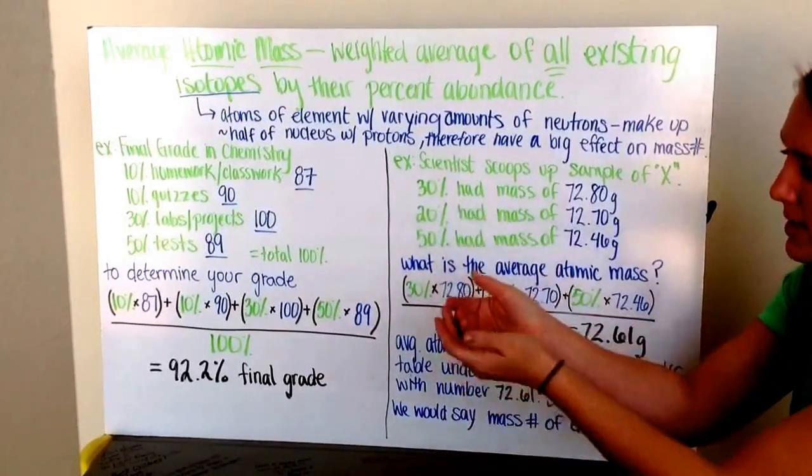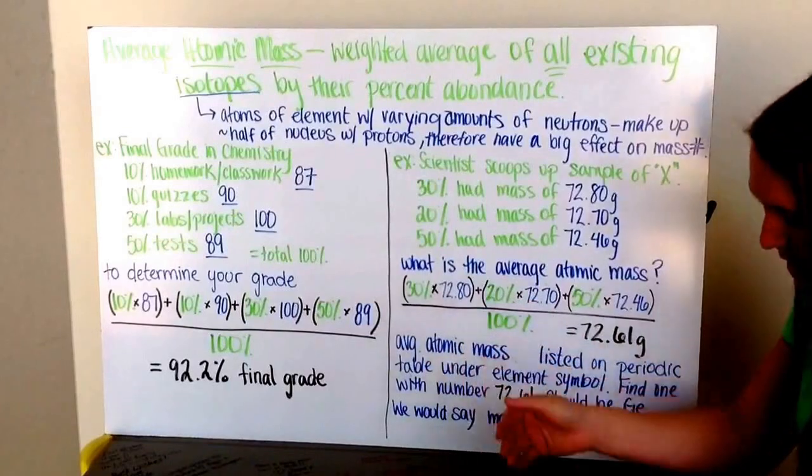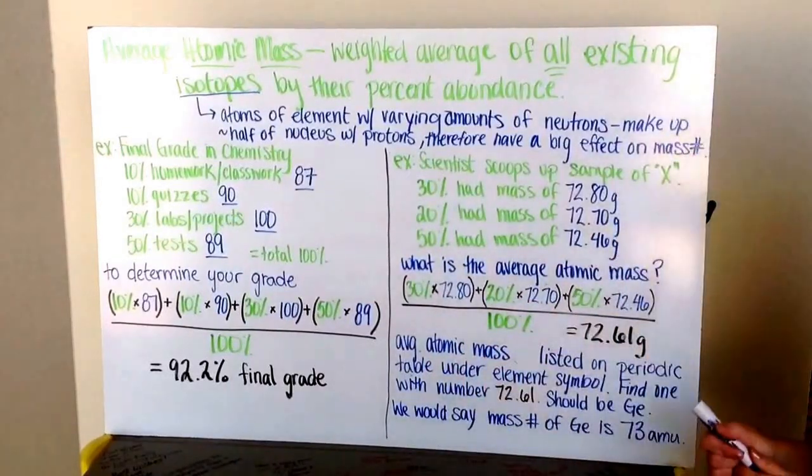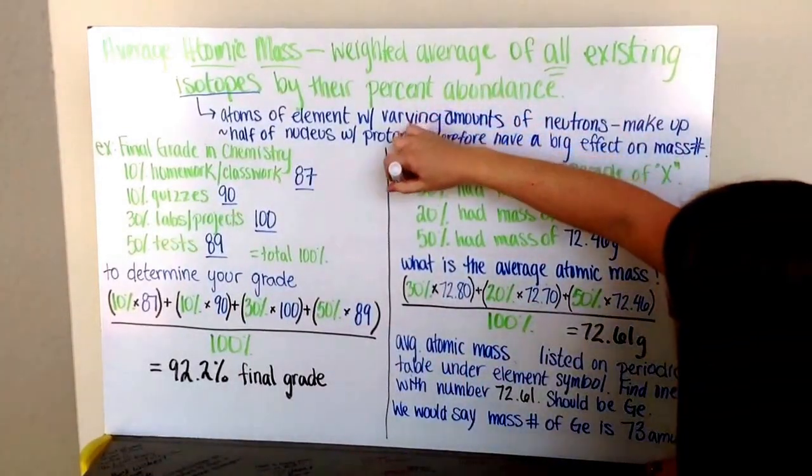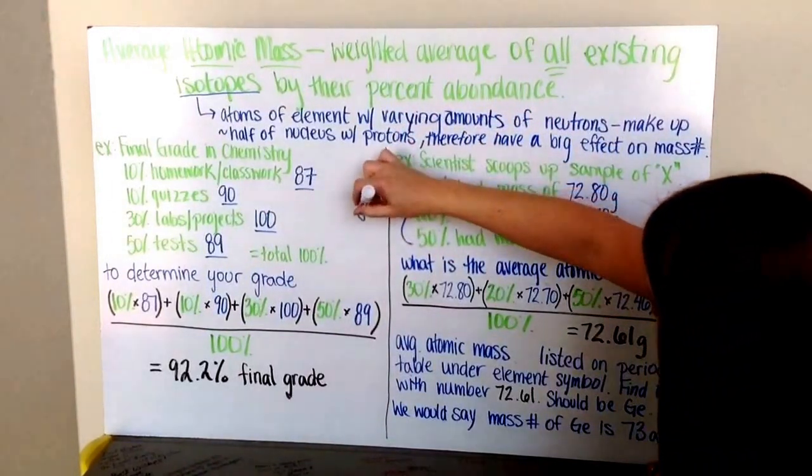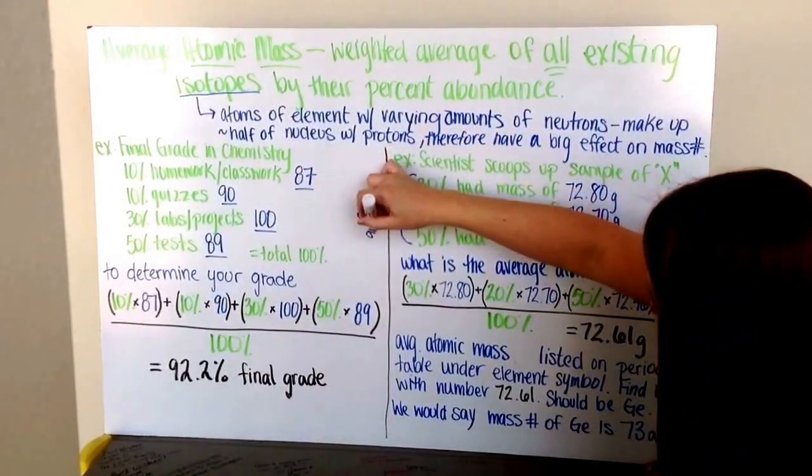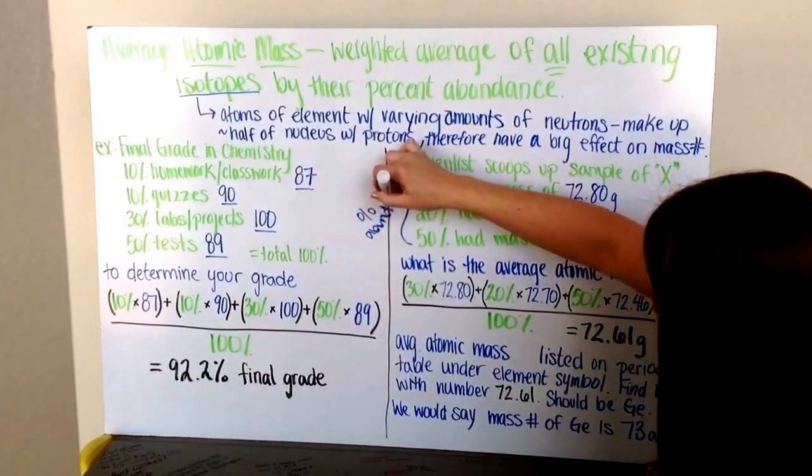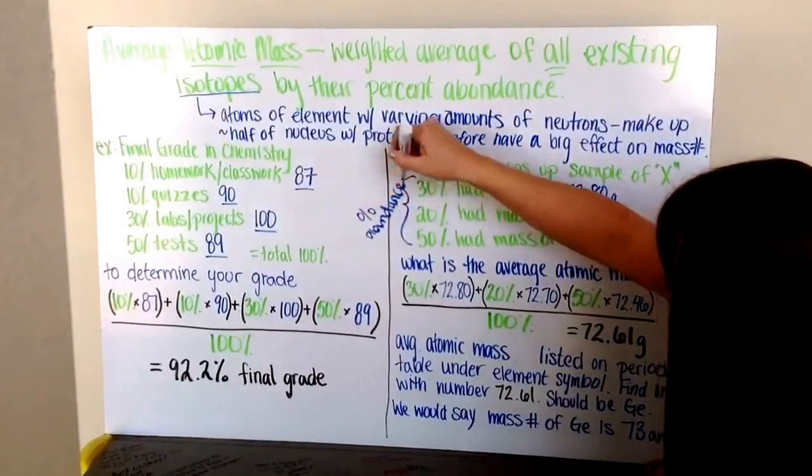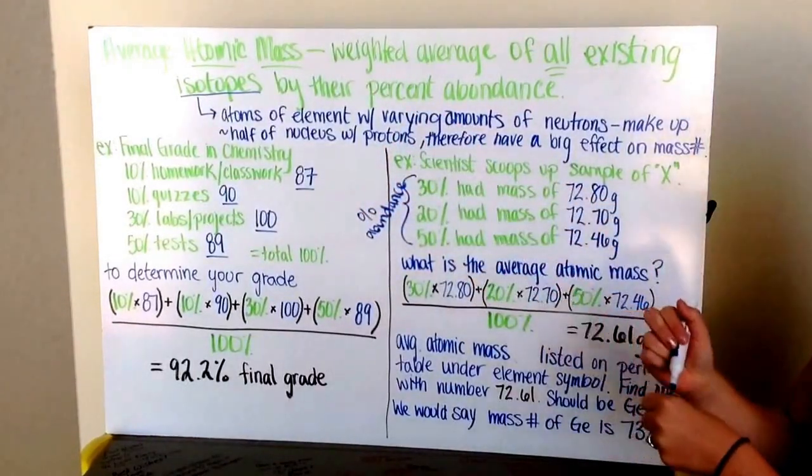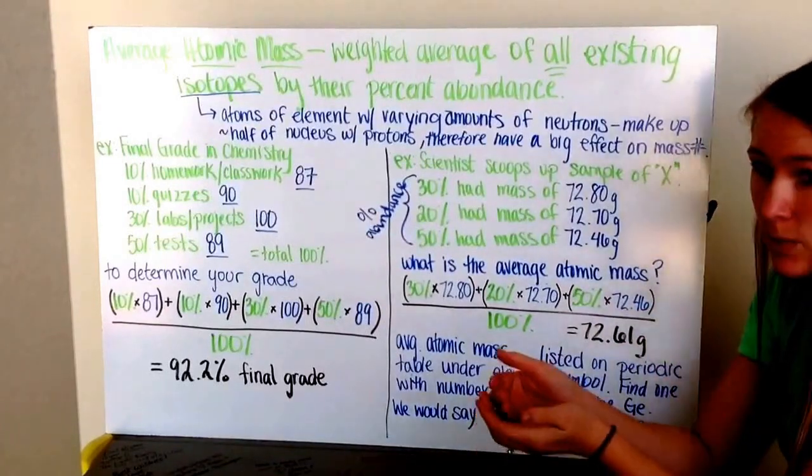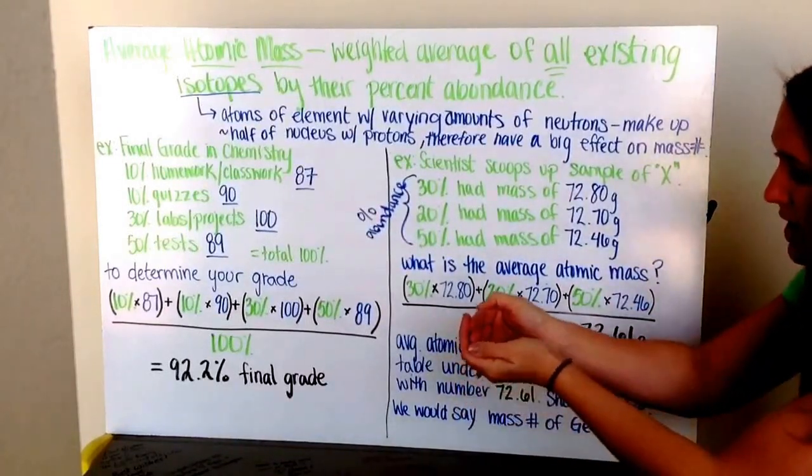The percent of what they have is equal to the percent abundance. Percent abundance means how abundant it is, or how much they have.